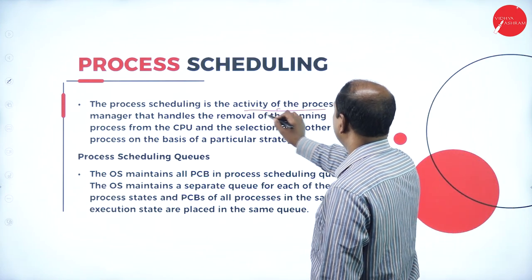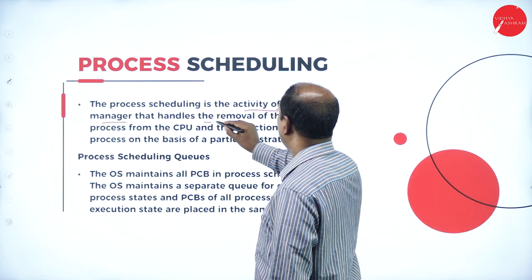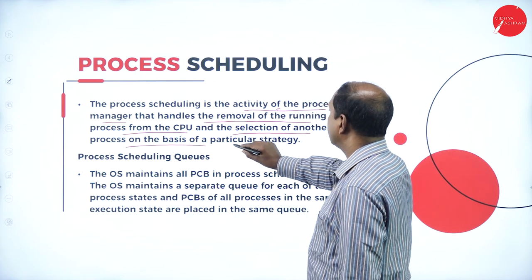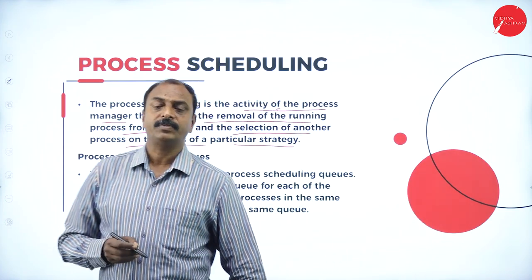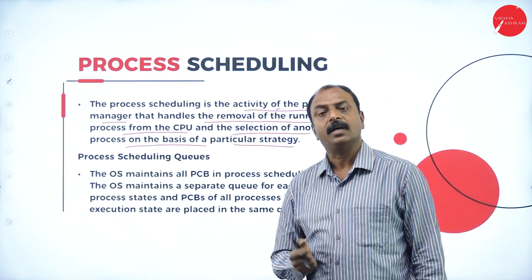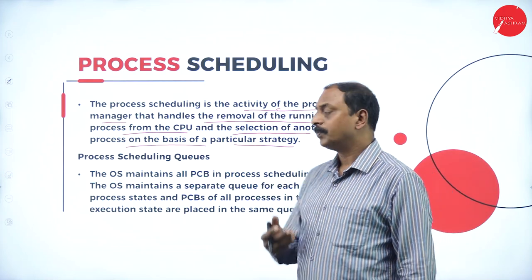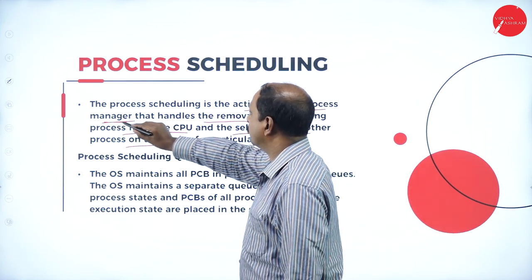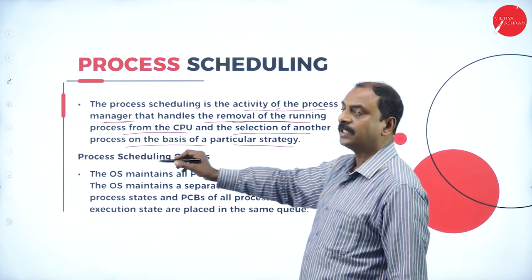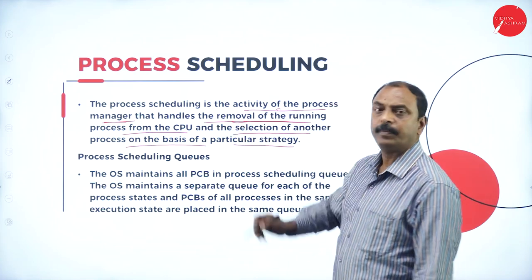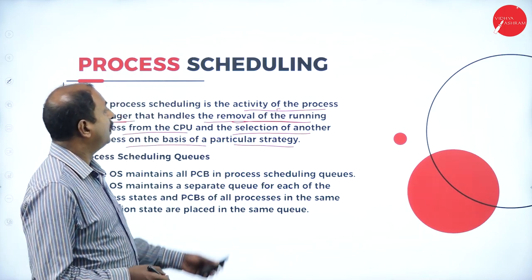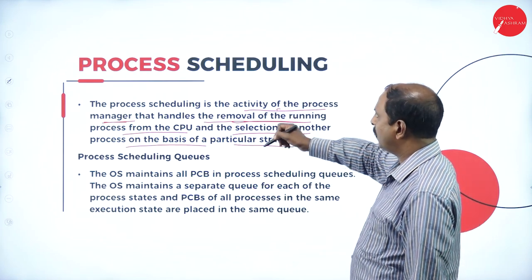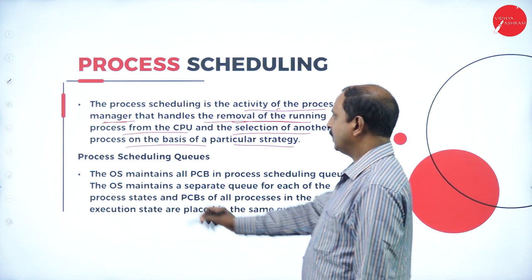What is process scheduling? It is the activity of the process manager that handles the removal of the running process from the CPU and selection of another process on the basis of a particular strategy. As we saw, if there are more than one process to be executed, all the processes will be in a pool or queue. The process manager handles the removal of the running process from the CPU and allocates time for other processes ready to be executed — those processes are all in a queue.